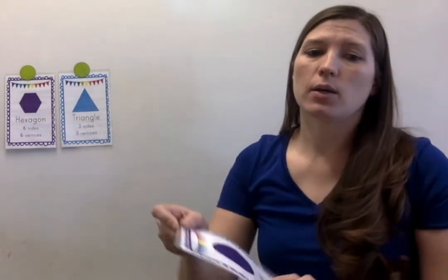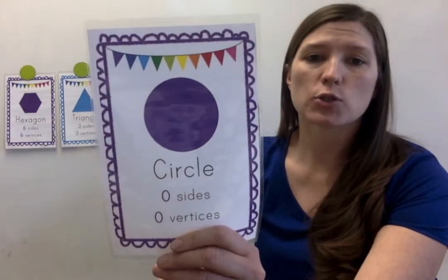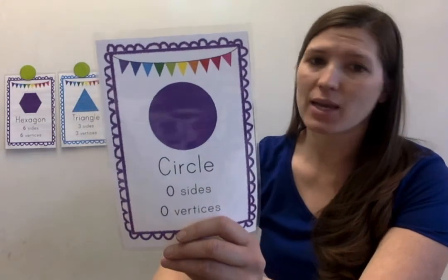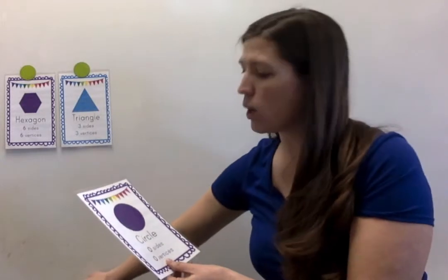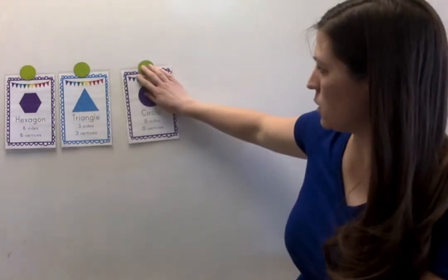Next, what shape is this? Circle. A circle is special because it has no straight sides and no vertices. It is just one round shape.